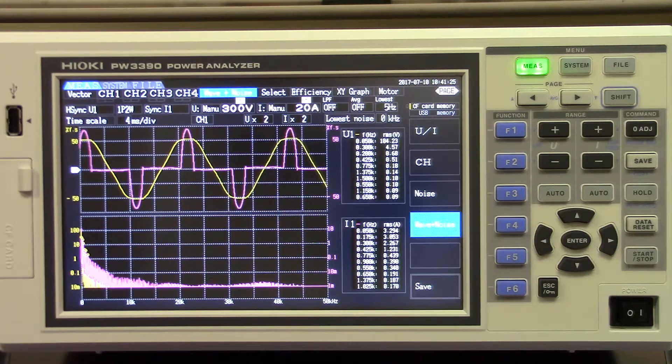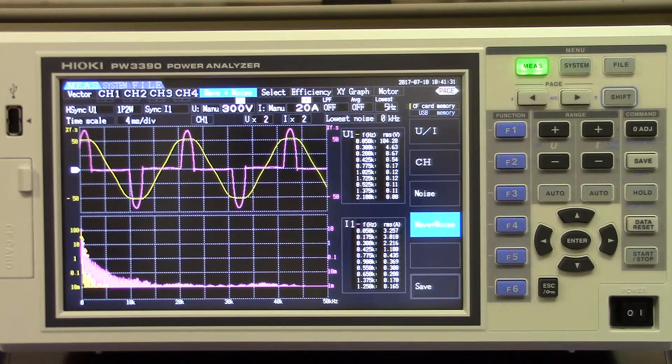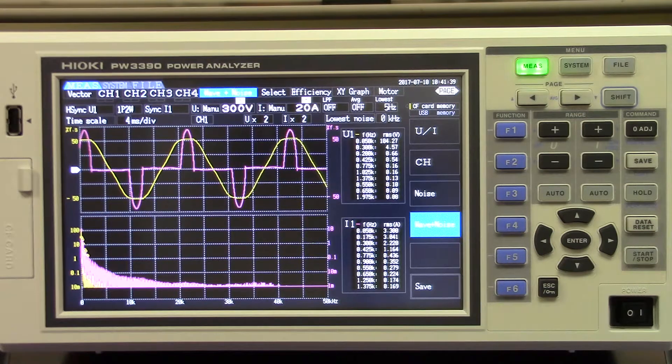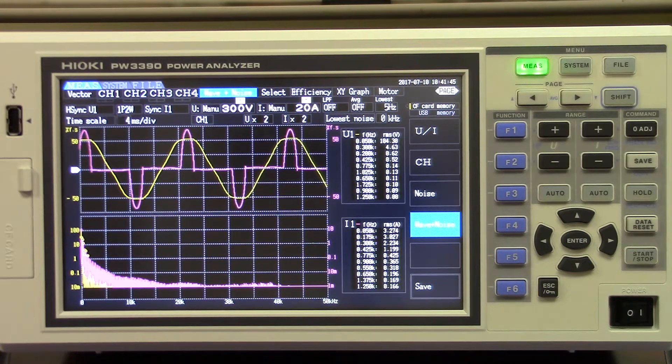Recorded data can be stored on a compact flash card then transferred to a USB jump drive right on the unit. The PW3390 also provides an Ethernet port and built-in HTTP server so the unit can be accessed and remotely controlled through a PC's web browser. Up to four 3390s can be daisy-chained and synced together to provide up to 16 channels of analysis.